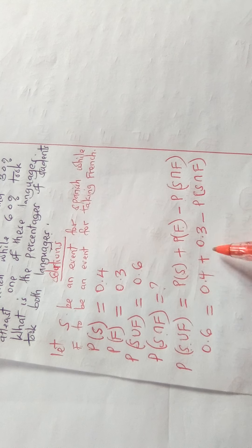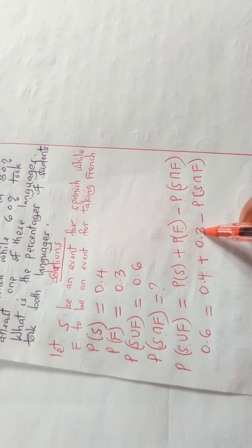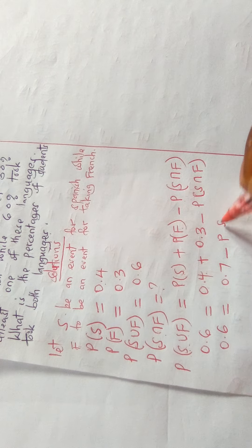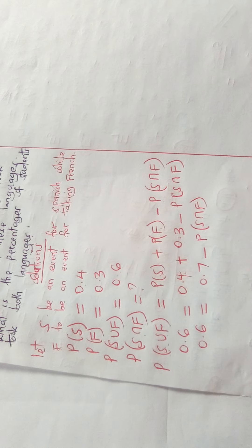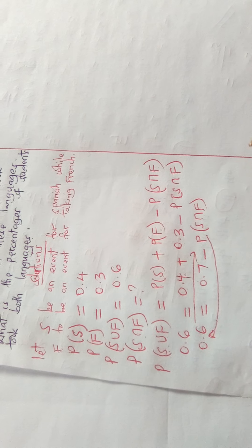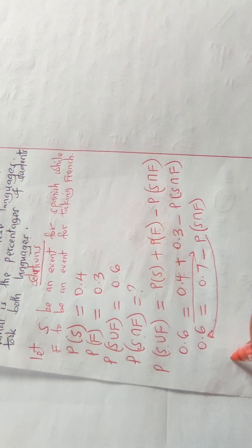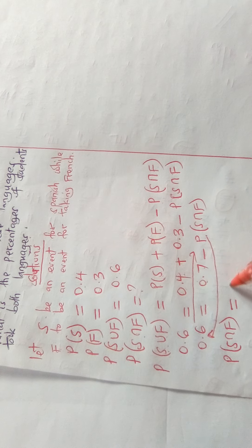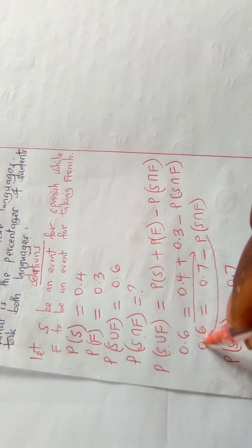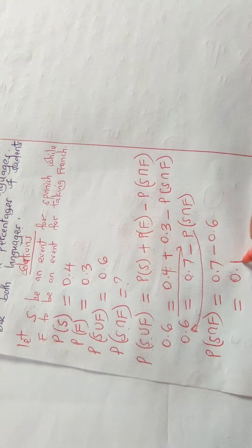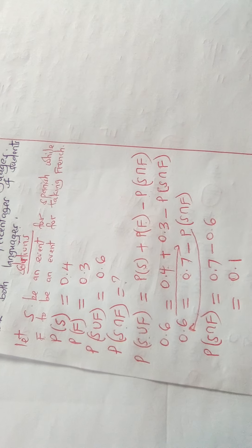Simplifying: 0.4 plus 0.3 is 0.7, so we have 0.6 = 0.7 − P(S ∩ F). Collecting like terms, bring P(S ∩ F) to the left — when a negative crosses the equal sign it becomes positive — giving P(S ∩ F) = 0.7 − 0.6, which equals 0.1.